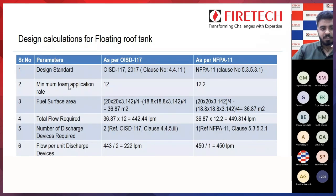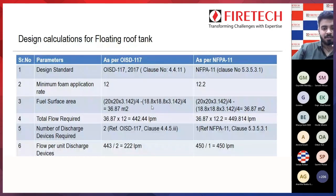The minimum foam application rate: referring to the tables understood before, it is 12 as per OSD 117 and 12.2 as per NFPA 11. For fuel surface area, since this is a floating roof tank, there is a foam dam that needs to be protected. We calculate: external diameter minus internal diameter — the foam dam is 600 mm, so subtracting 1.2 from 20 gives 18.8 m internal diameter. Using pi/4 × D² minus pi/4 × d², we get 36.87 m² as the fuel surface area. Same for NFPA — no change.